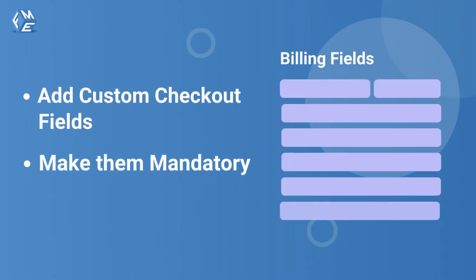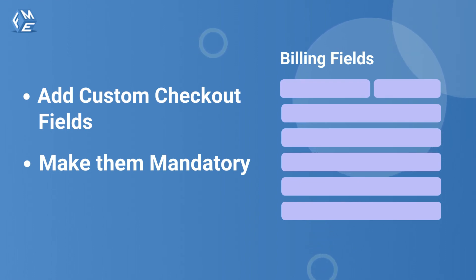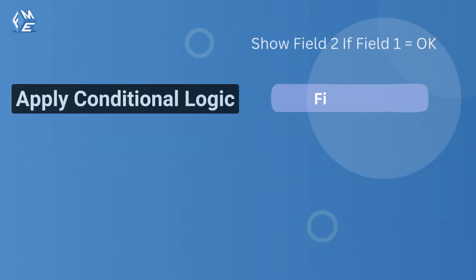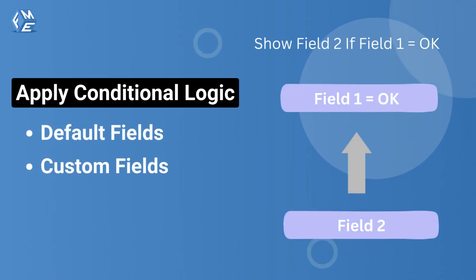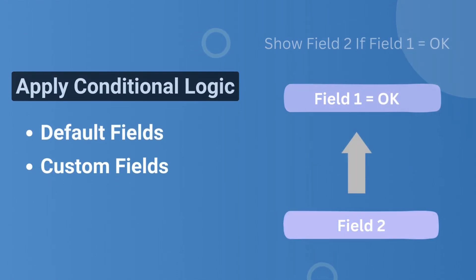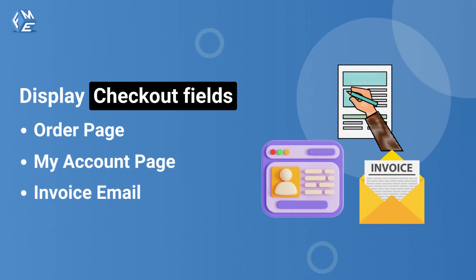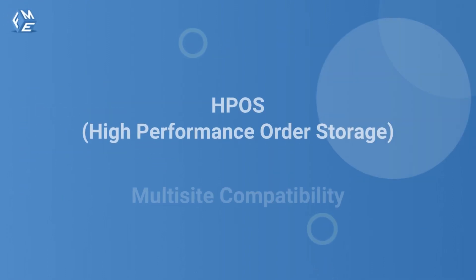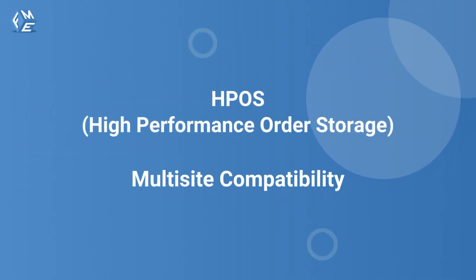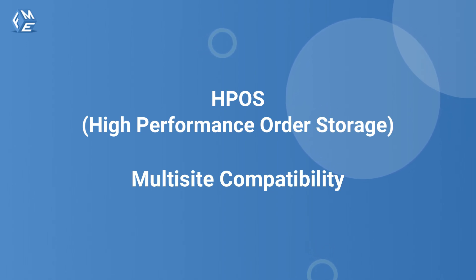You can add custom checkout fields in the default checkout page with our plugin and also can make them mandatory. Our plugin applies conditional logic on default and custom checkout fields. WooCommerce custom checkout fields allow you to display these fields on the order page, my account page, and invoice email. Our custom checkout field plugin is fully compatible with HPOS high-performance order storage and multi-site. Let's see our plugin in action.